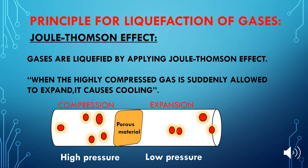Let's discuss the mechanism of the Joule-Thompson effect. As you can see in the diagram, gas molecules are passed from a high pressure region to a low pressure region through a porous material. At high pressure, the gas molecules are compressed, and due to the decrease in kinetic energy, they come closer and attract each other.